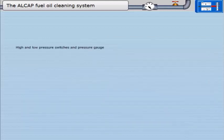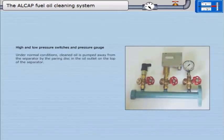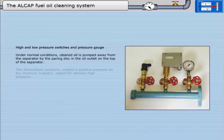High and low pressure switches and pressure gauge. Under normal conditions, cleaned oil is pumped away from the separator by the pairing disc in the oil outlet on the top of the separator. The downstream pressure creates a positive pressure on the pressure indicator called the delivery high pressure.